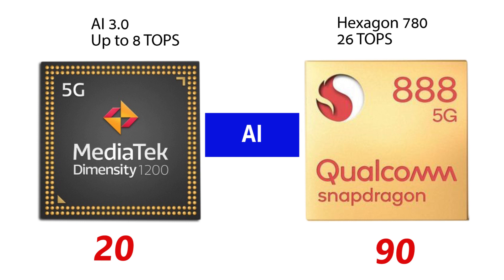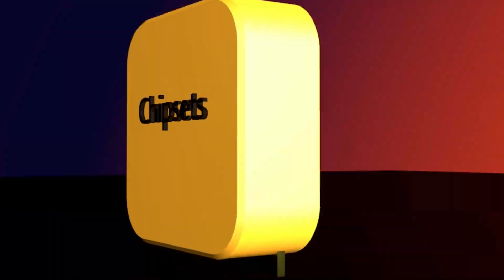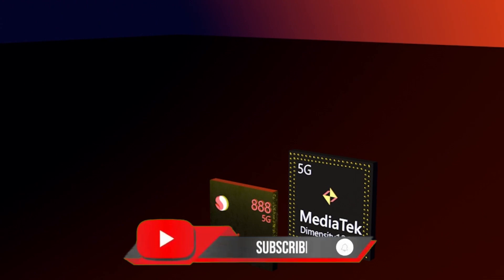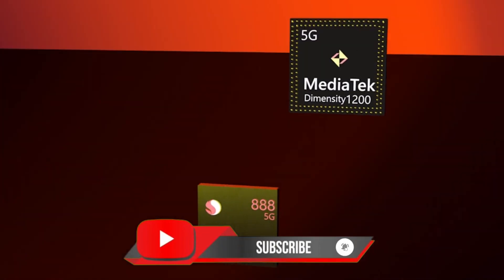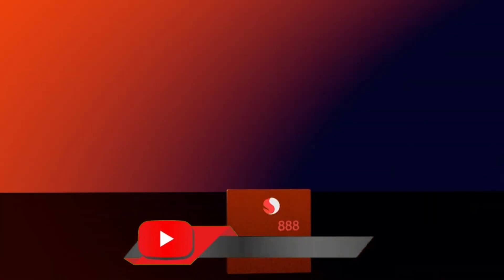Overall, adding all these scores together, the winner of this comparison is the Qualcomm Snapdragon 888. Tell me in the comment section which other chipset comparison you would love to see, and remember to subscribe for more and turn on your post notification. I will see you around in my next one.